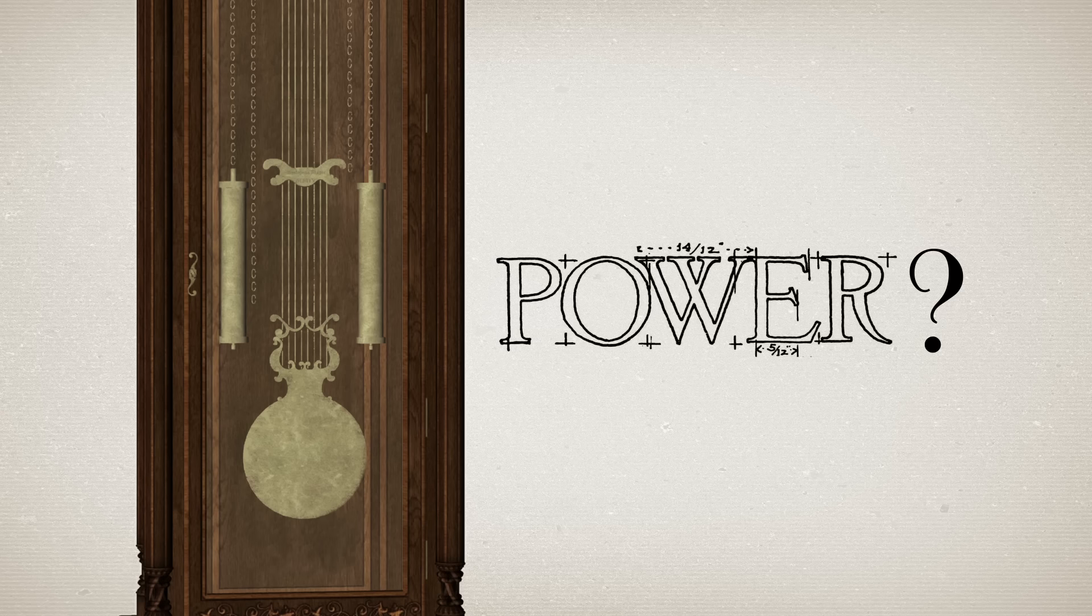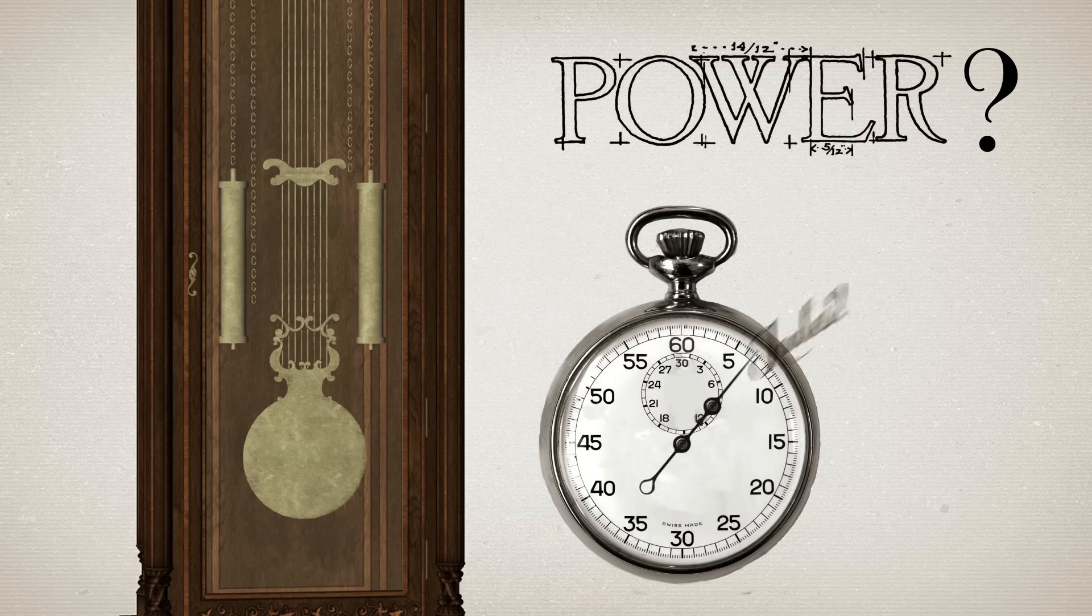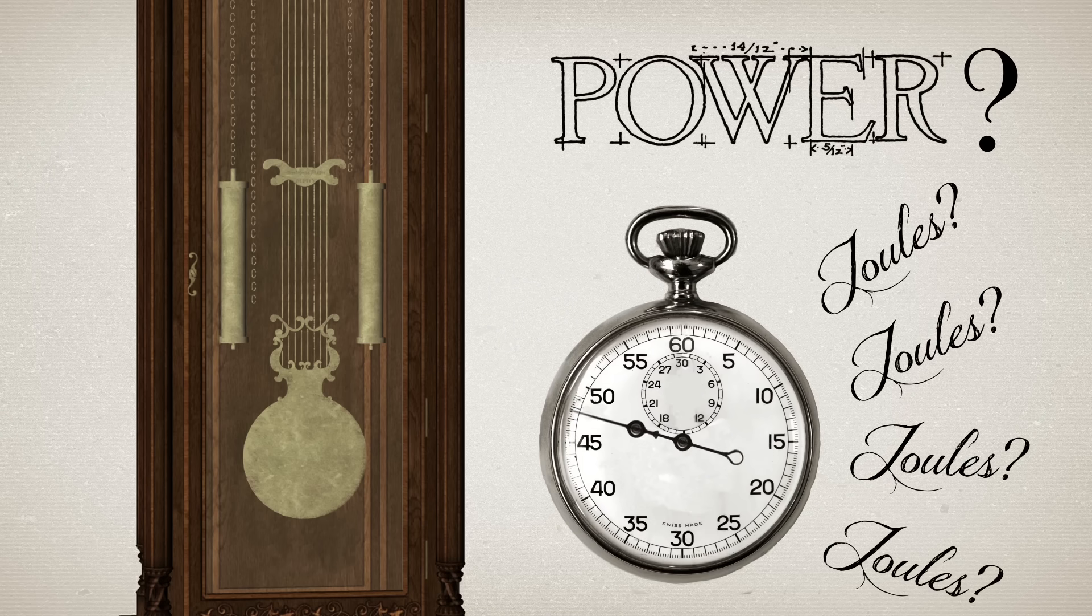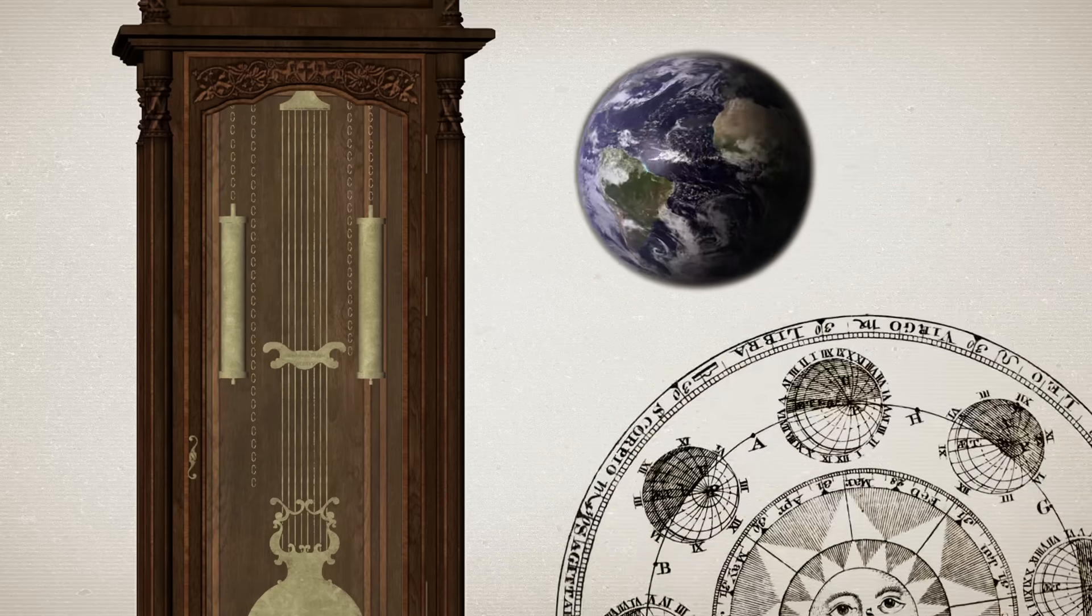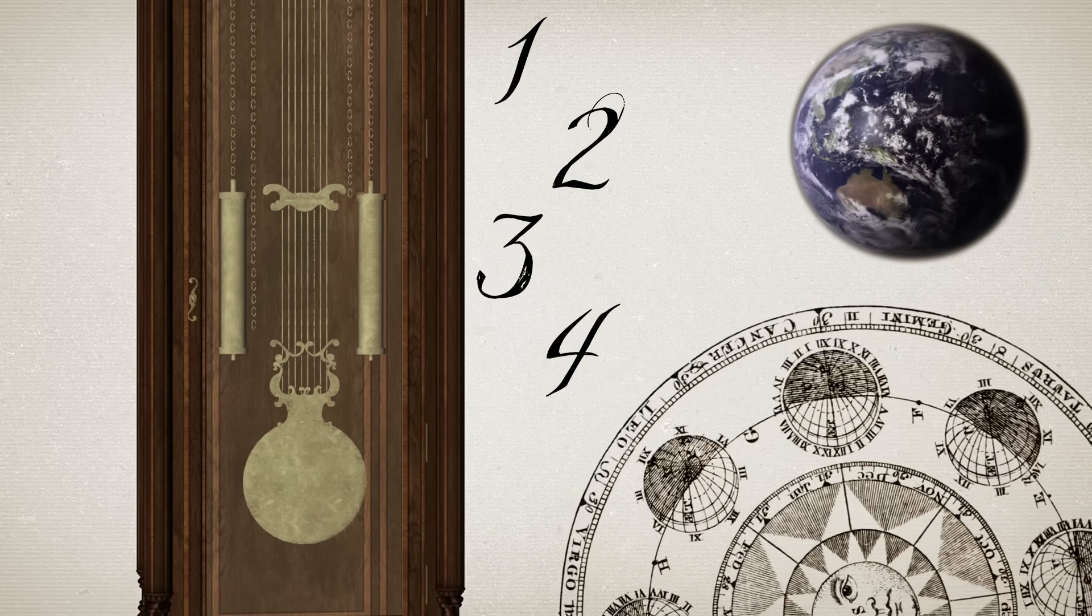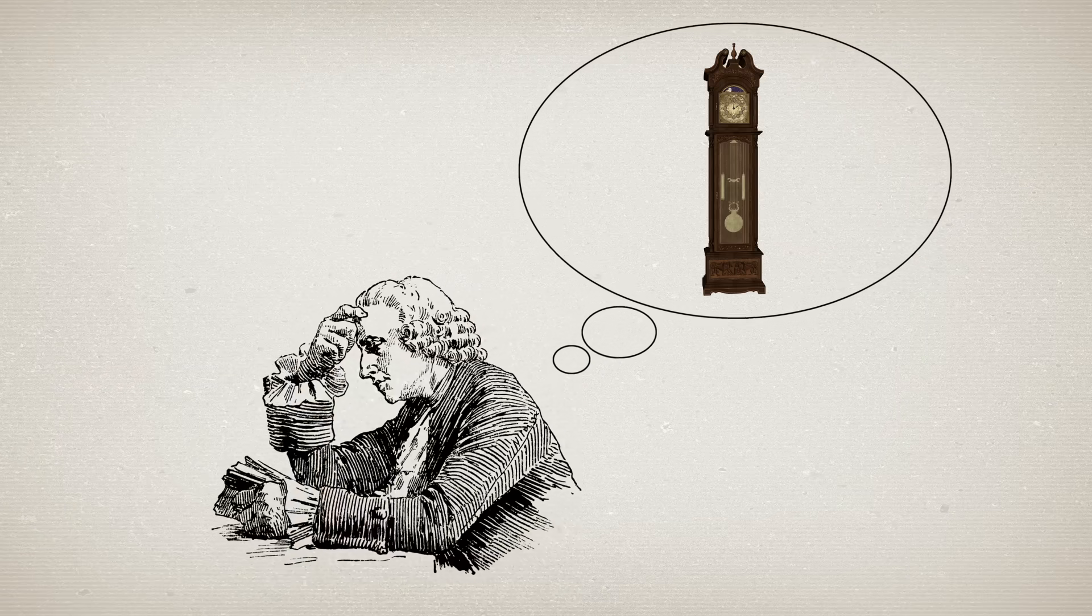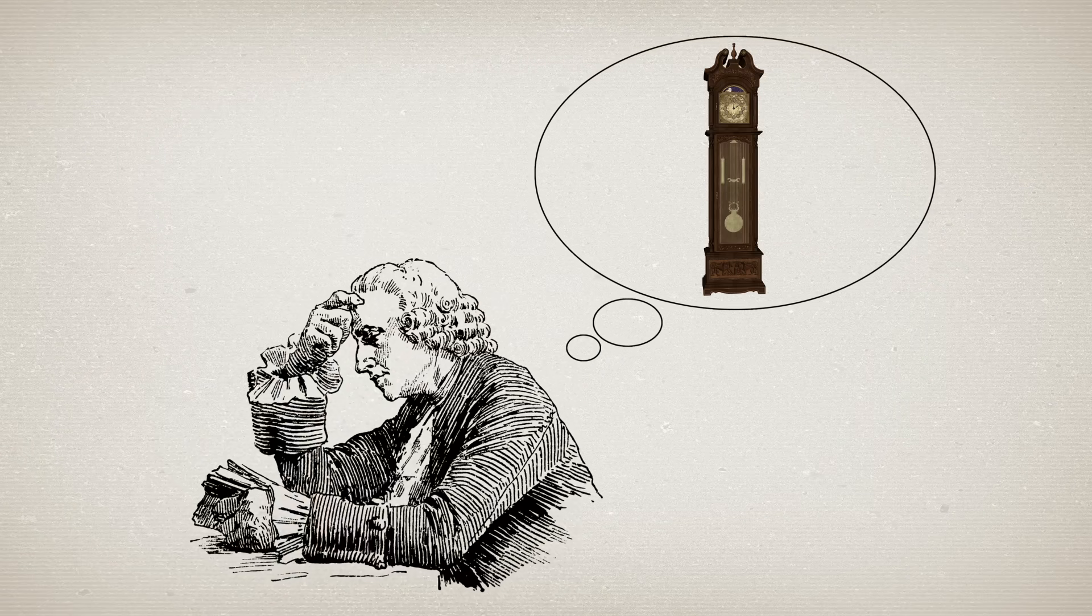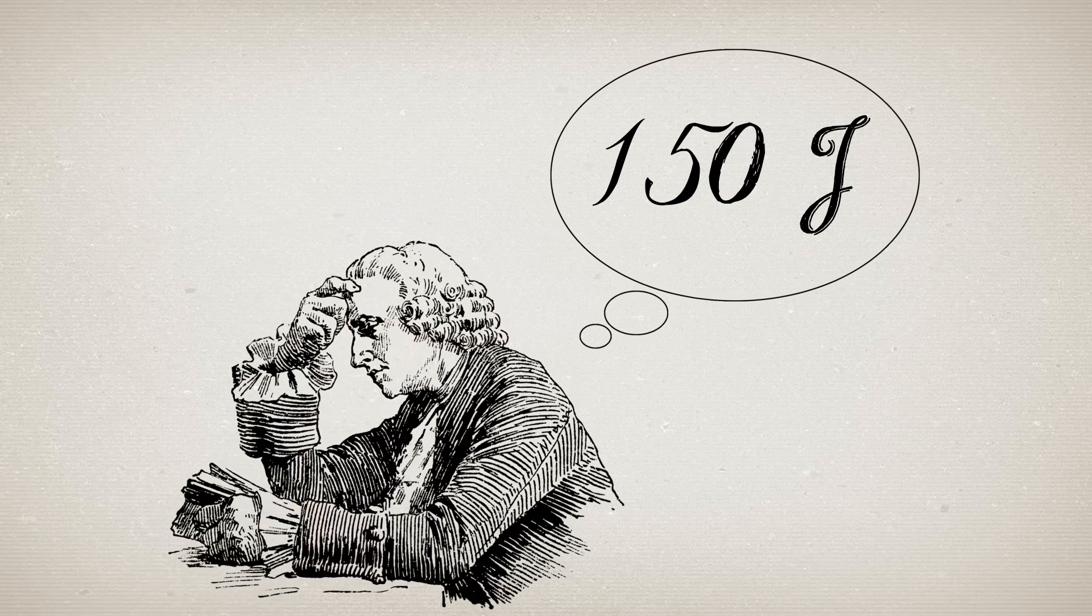So how much power does the clock use? That is, how many joules of energy per second leave the clock, if it takes 5 days for the cylinders to return to their original position? We can figure this out, because we already know how much work we did when we lifted the cylinders, 150 joules.